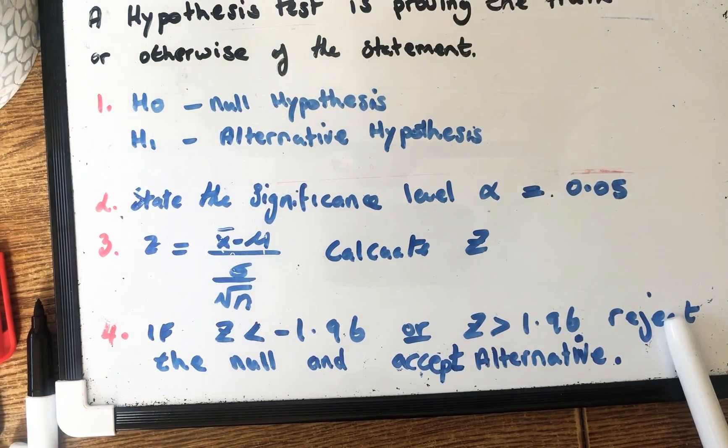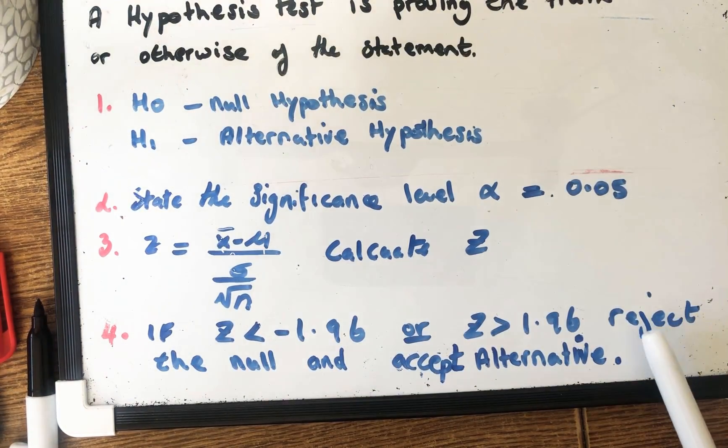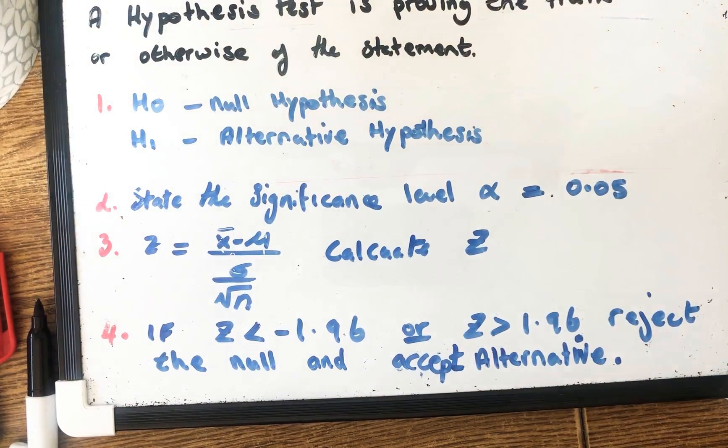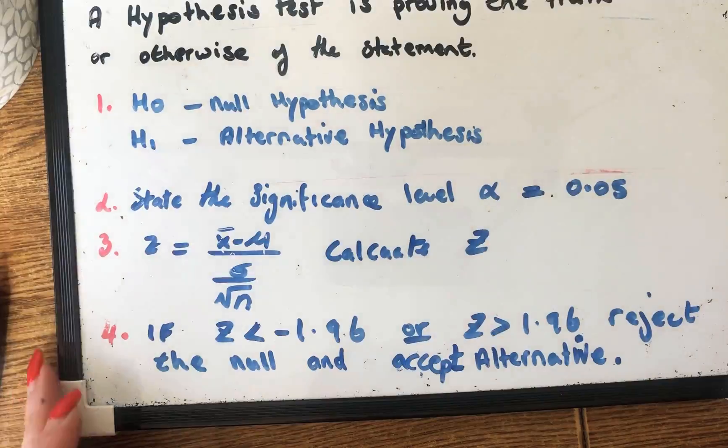So you reject the H0 and you accept the alternative. So in other words, whatever you said for the null, well that in case is not true and you accept the alternative, which in this case is true. So let's have a look at a good example of this.